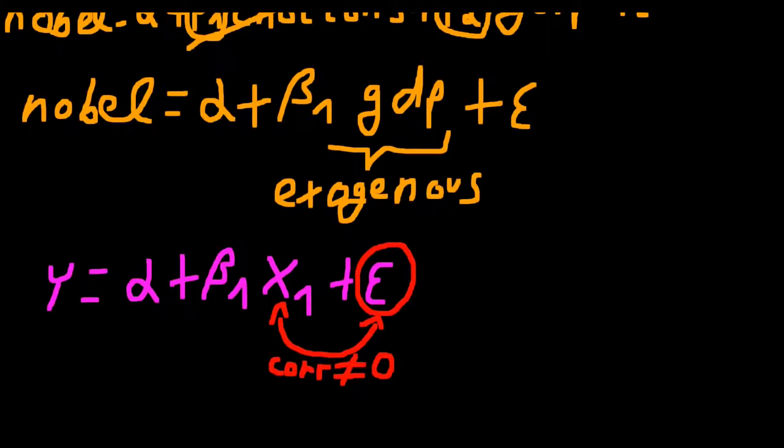Well, first and foremost, just try to avoid omitting an important variable. Just put it into your regression. But sometimes this might not be possible because either there is no data or you can simply not measure the variable.